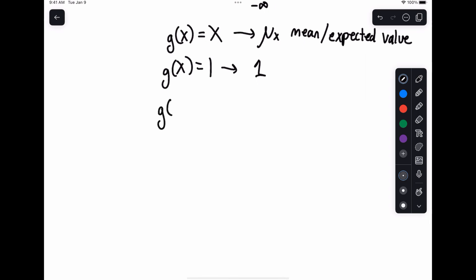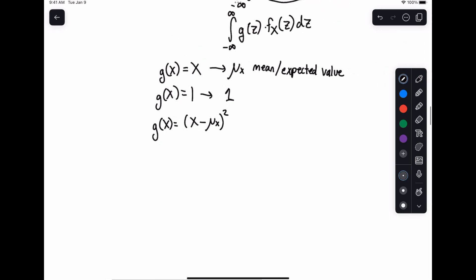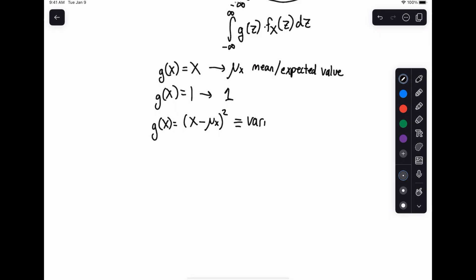Now, if g of x is equal to the quantity x minus mu of x squared, what you get out of this, or what this is called, is the variance of x, or often what we write it as the standard deviation squared. So the standard deviation is just the square root of the variance. And this is, of course, a measure of central tendency.